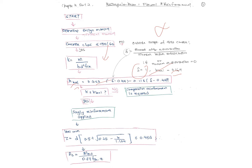Compare k and k_balance. If k is less than k_balance, proceed with single reinforcement. If not, you need compression reinforcement. Remember: compression reinforcement is on top and tension reinforcement is at the bottom.